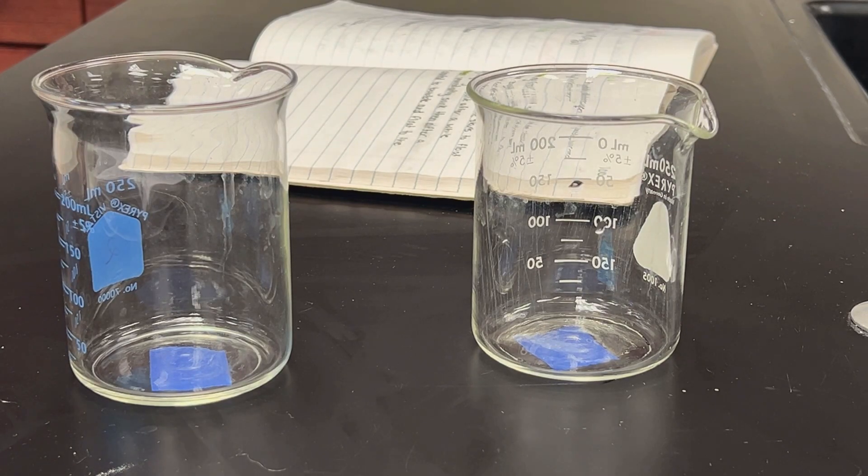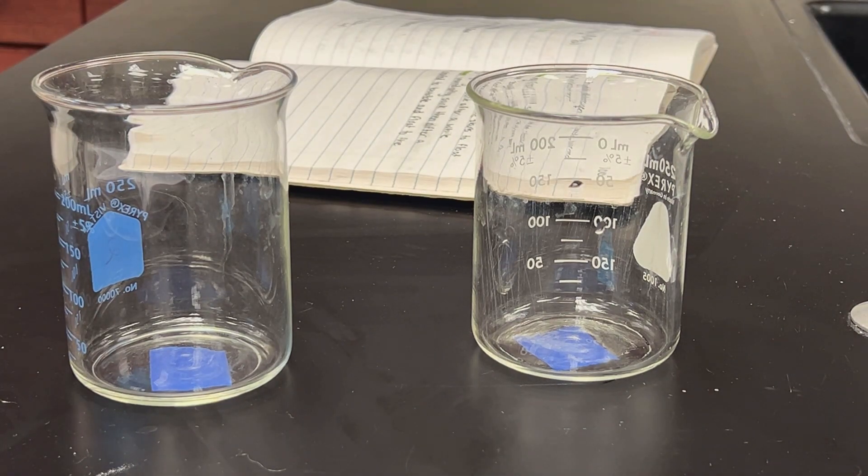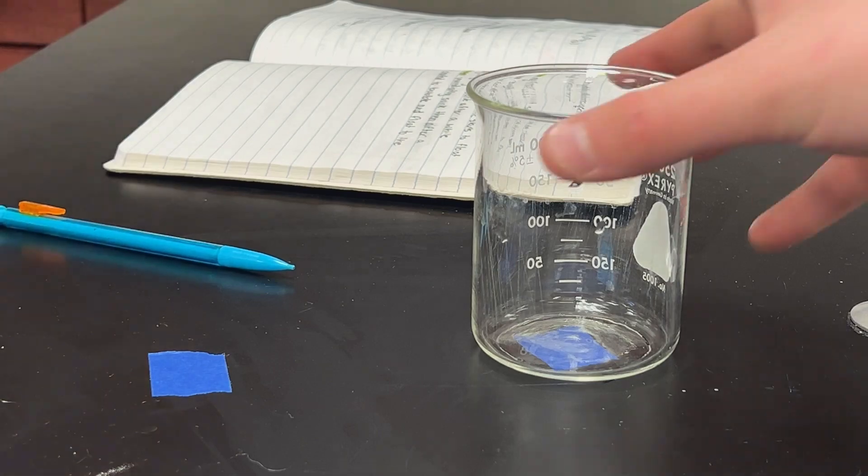Hello, so we're doing our lab today. We're going to start with investigate number six. It says pour 200 milliliters of hot water into one beaker and 200 milliliters of ice water into another beaker. Add a teabag to each. So we're going to go get the water.